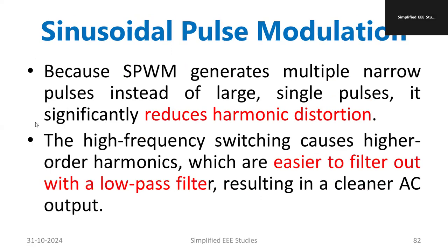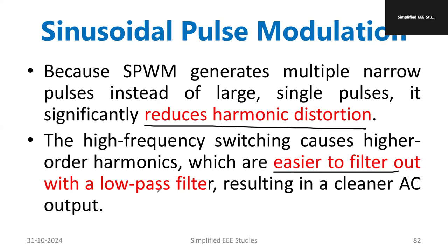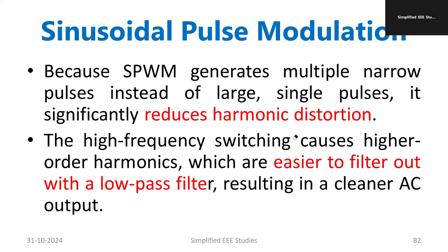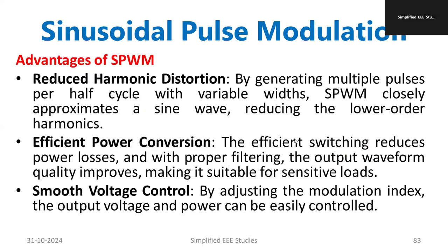The most important thing to remember is that there is a reduction in harmonic distortion, because more number of pulses are generated at each cycle. Therefore, lower order harmonic presence can be minimized. The remaining harmonic content can be easily filtered out using a low pass filter. The design of the low pass filter is not very difficult to manage.